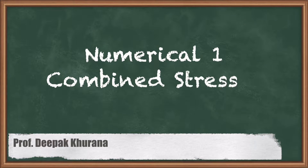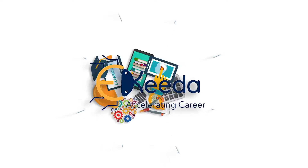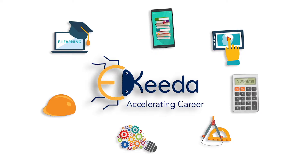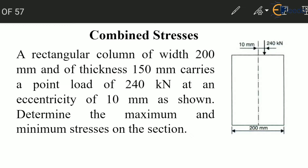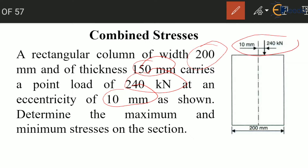In this session, let us solve a question on combined bending and direct stresses. A rectangular column of width 200 mm and thickness 150 mm carries a point load of 240 kilo Newton with an eccentricity of 10 mm. We have to determine the maximum and minimum stresses on the section.